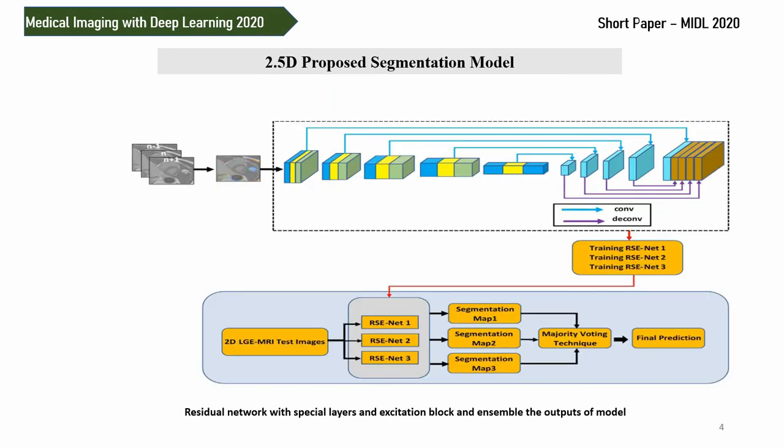Our proposed model is based on 2.5D segmentation. The complete process is based on 3 steps. In the first step, we stack 3 consecutive slices from the input image slices in order to make an RGB-like image, which is called the 2.5D or 3D pseudo-technique.